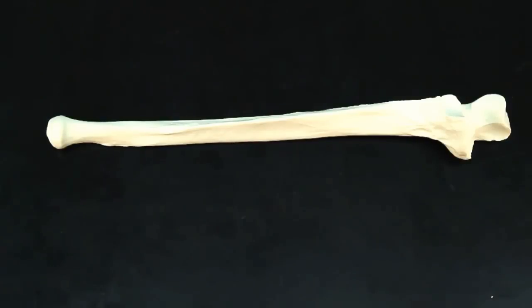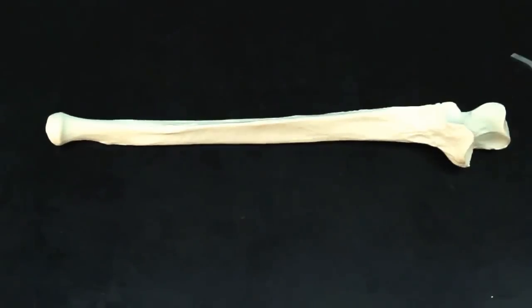So what we're looking for is the olecranon process. This tip right here, the very proximal tip, is the olecranon process. You can think of the olecranon process as your elbow. The very tip of your elbow that you can touch is the olecranon process.